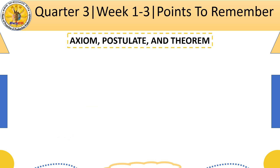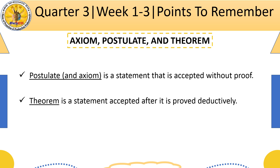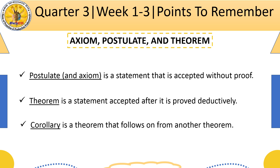Now, let us discuss axiom, postulate, and theorem. Axiom and postulate are the same. In general, we use postulate in geometry and axiom in other areas of mathematics. A postulate is a statement that is accepted without proof. These statements are often expressed using undefined terms and definitions. On the other hand, a theorem is a statement accepted after it is proved deductively, using postulates, definitions, and other established theorems. Lastly, a corollary is a theorem that follows on from another theorem.